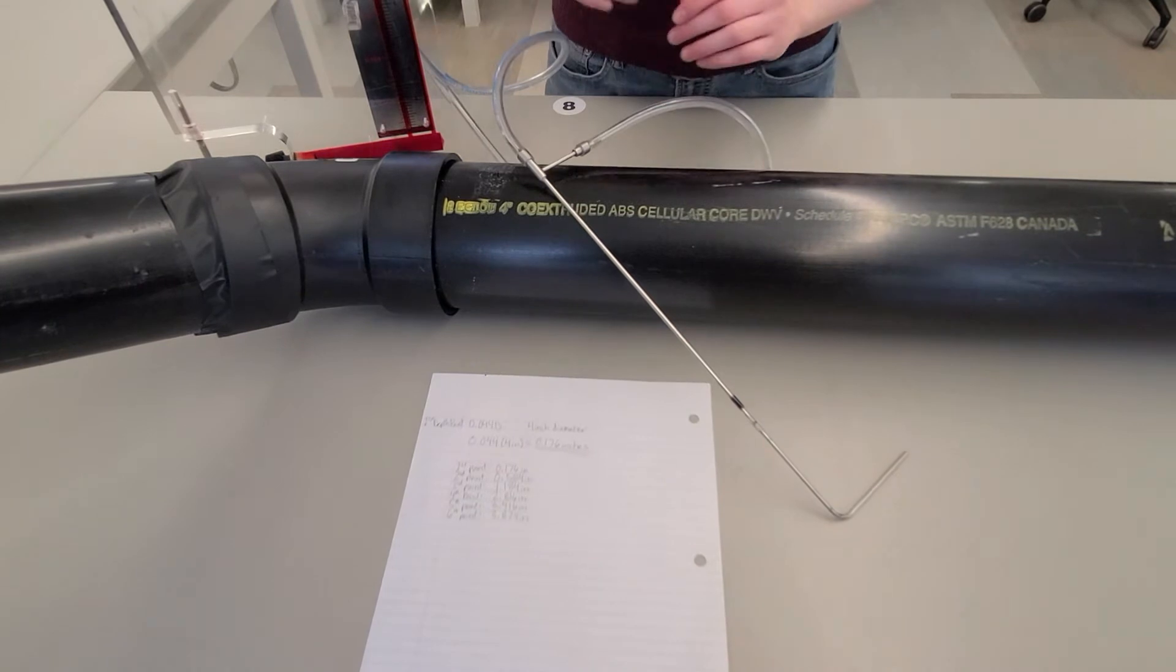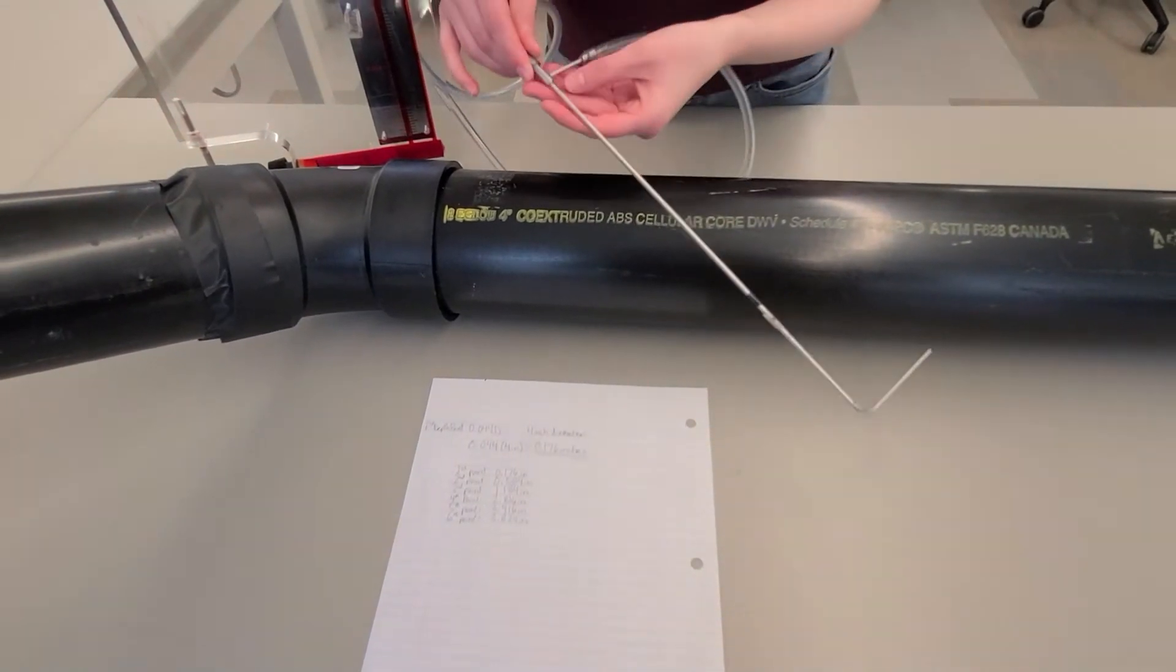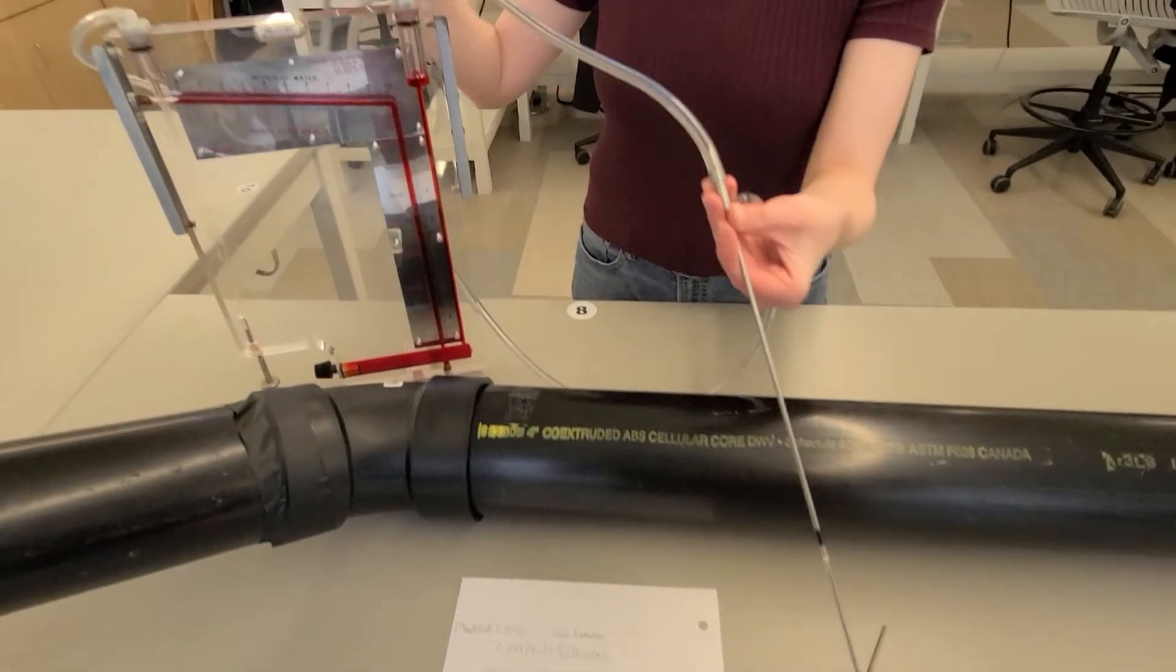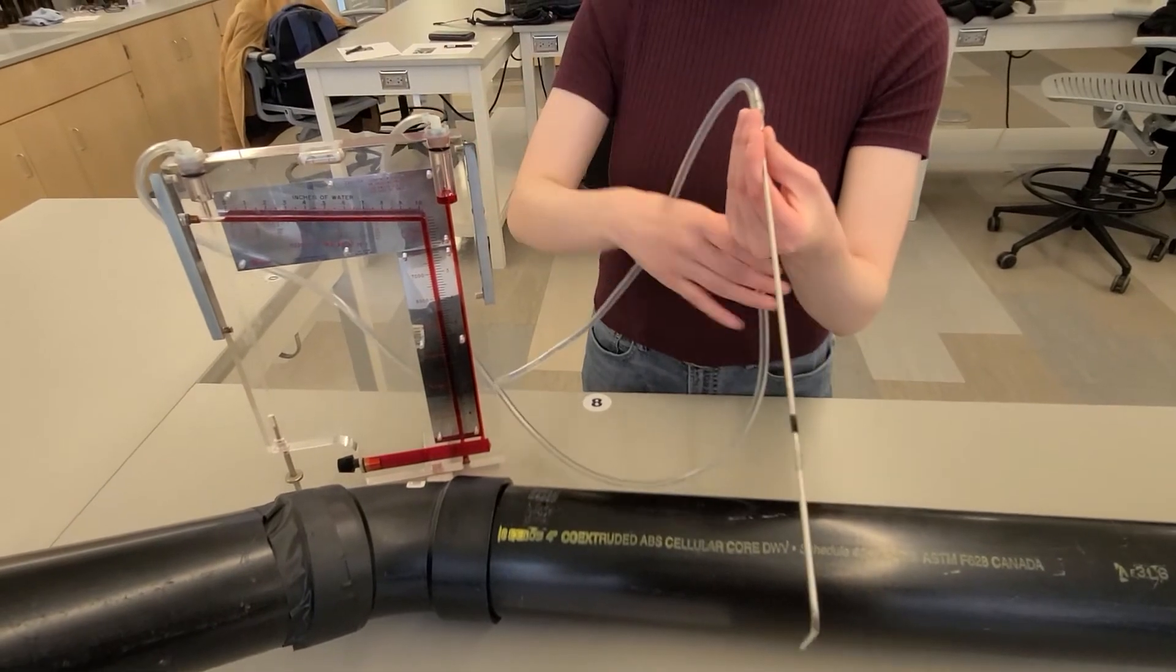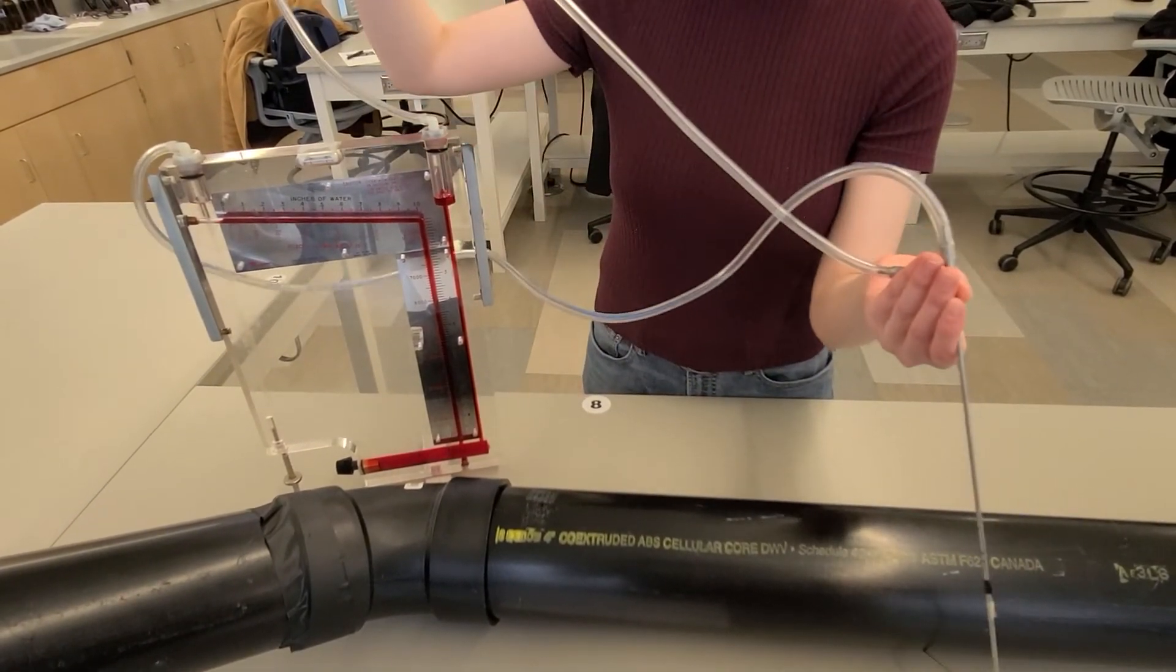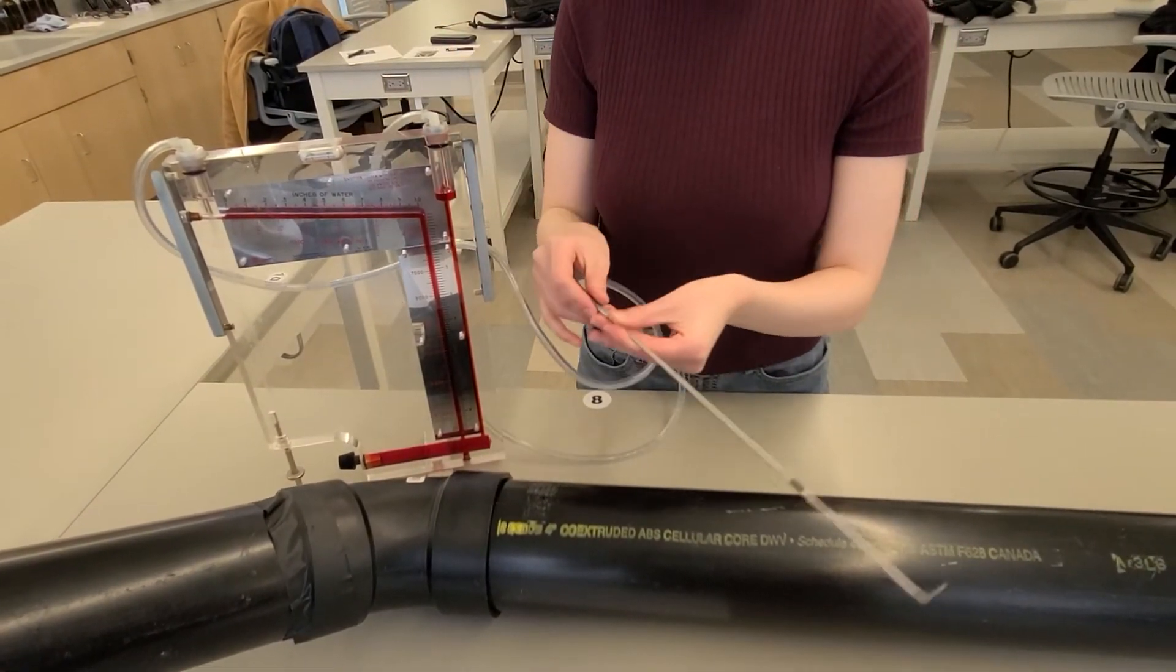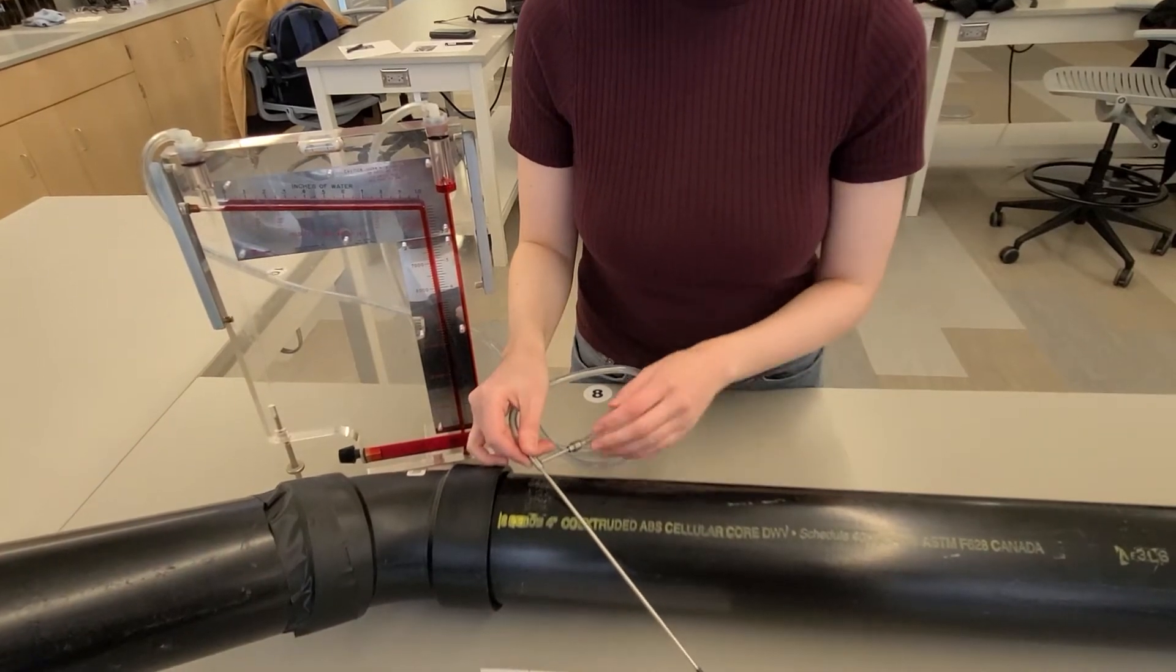Here we've set up a pitot tube to measure the velocity pressure within the duct traverse. Make sure that your instrument is set up properly to measure velocity pressure and/or velocity. We are using an inclined manometer to measure inches of water gauge for velocity pressure.